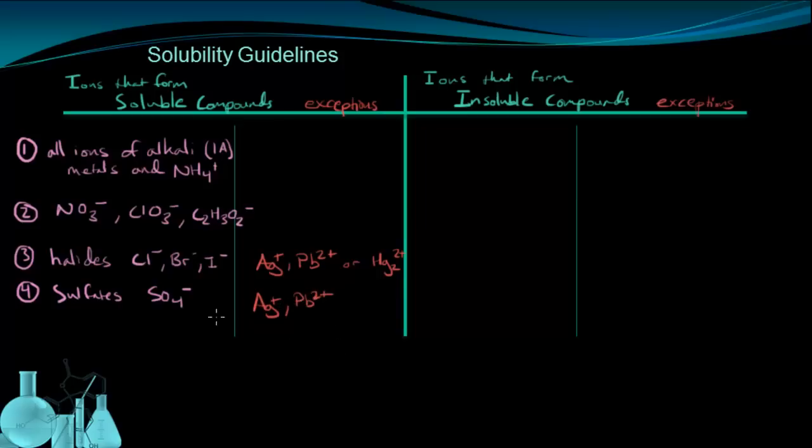So Ag plus the silver ion and the lead ion, the lead 2 ion, are both exceptions to solubility for sulfate. If you see Ag with SO4 or Pb with SO4, that's going to be insoluble because it's an exception to this all sulfates are soluble rule. Now, there are more exceptions as well.